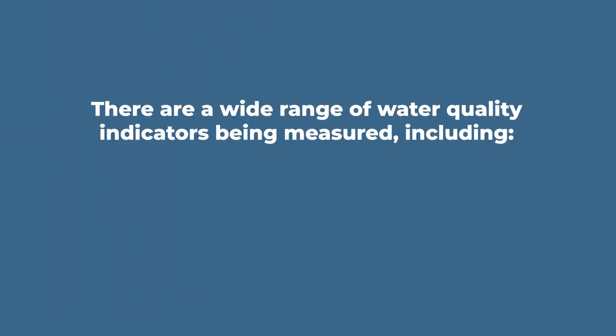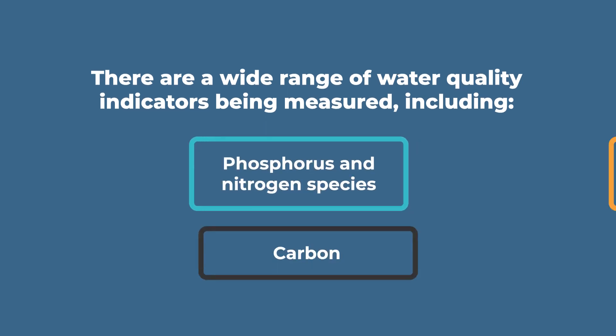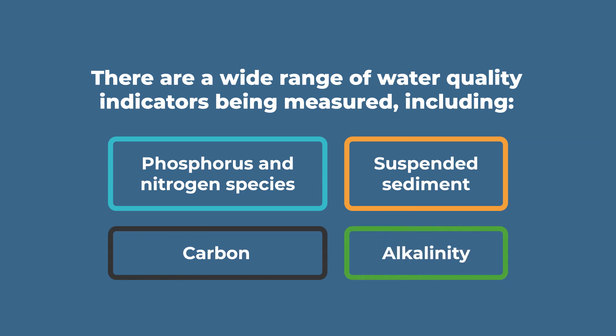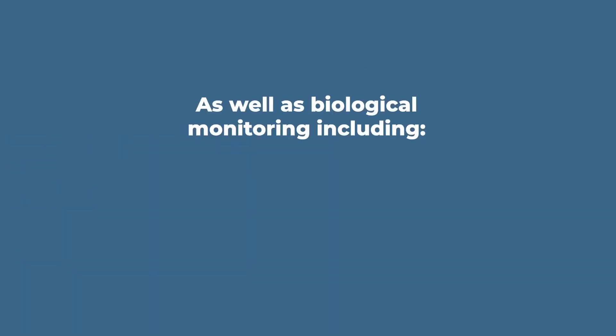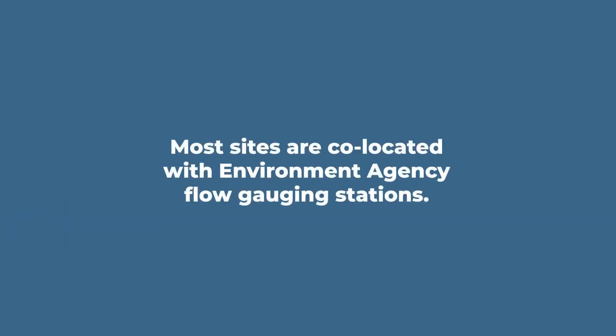There are a wide range of water quality indicators being measured, including phosphorus and nitrogen species, carbon, suspended sediment and alkalinity, as well as biological monitoring including chlorophyll and phytoplankton algal cell counts. Most sites are co-located with Environment Agency flow gauging stations.